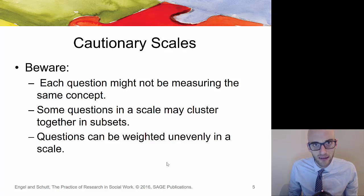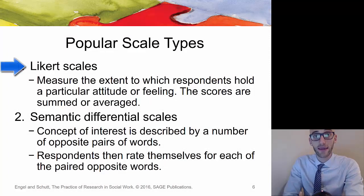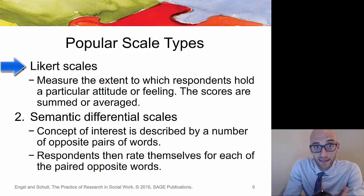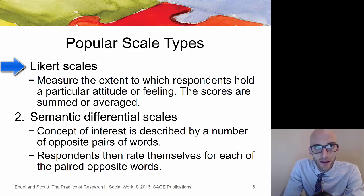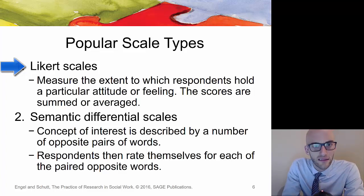Certain scales have negatively worded items, and most of the time if you're looking at a published scale you can find more information in the directions or the author's comments about the measurement properties of the scale. The Likert scale — something you're probably familiar with — is often seen as 'on a scale of 1 to 10, how would you rate your pain?' or rating your level of satisfaction with a program. Likert scales are used to measure the degree to which a respondent holds a particular value or feeling, and scores are often summed or averaged to give a composite score.